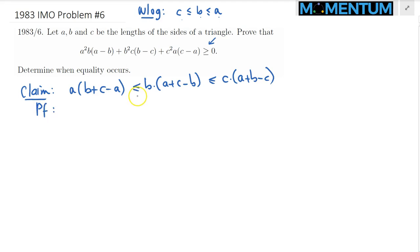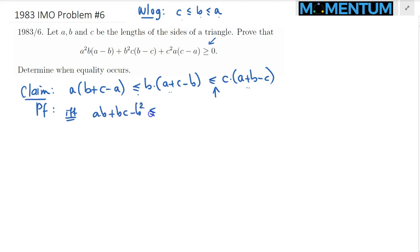The proof is straightforward — you can prove any one of the two inequalities and the other follows directly. Let's prove the second one. We expand: AB + BC − B² ≤ AC + BC − C².